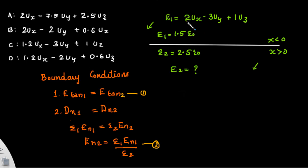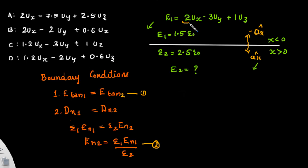The only thing we need to do is separate the given electric field into its normal and tangential components. The given separation is the x=0 plane, so the normal to it will be x-hat. On the left side it will be minus a_x and on the right it will be plus a_x. The x-component is the normal component and the remaining components are the tangential component.